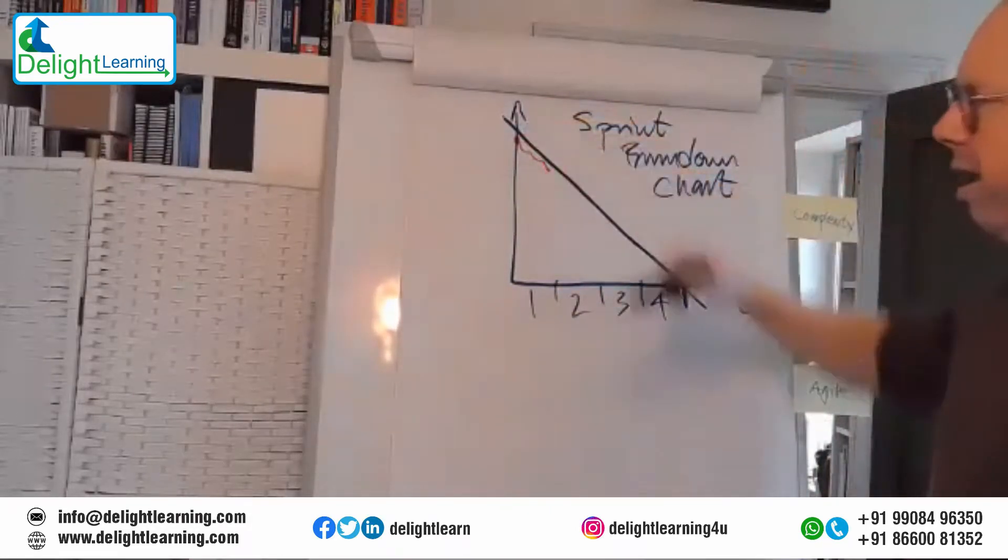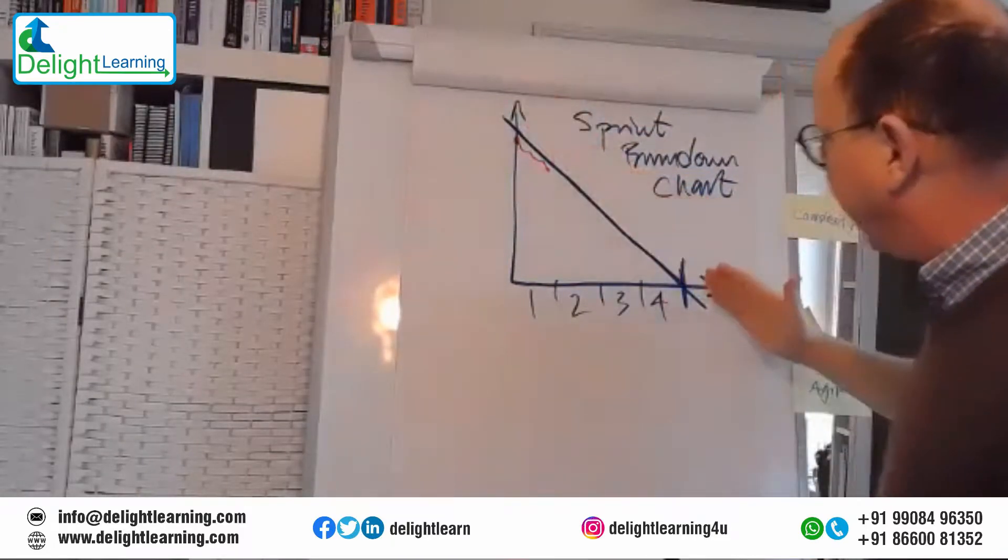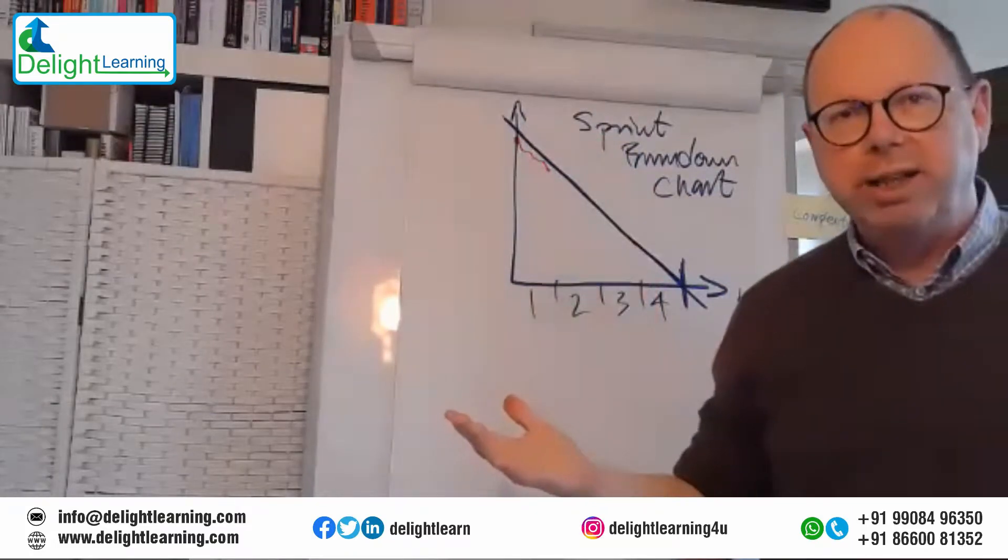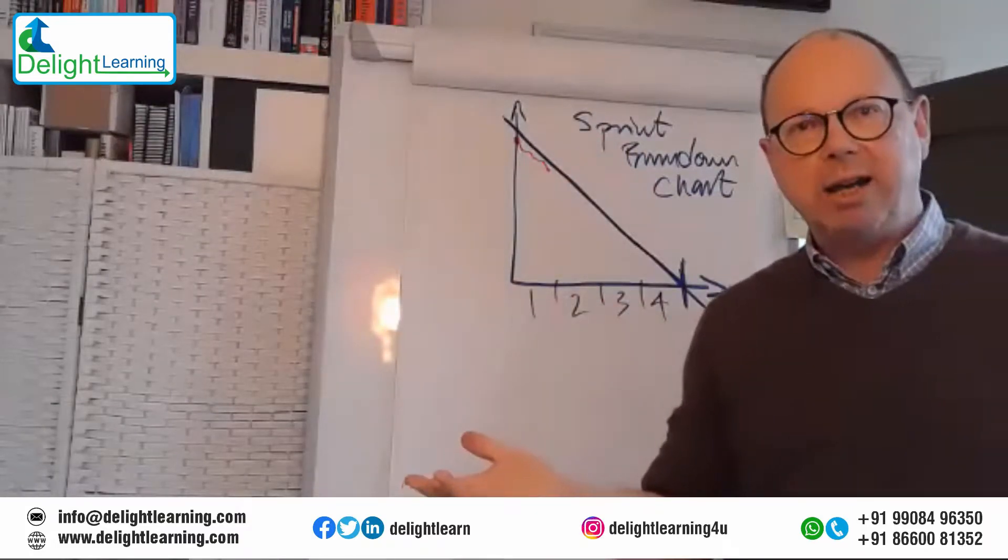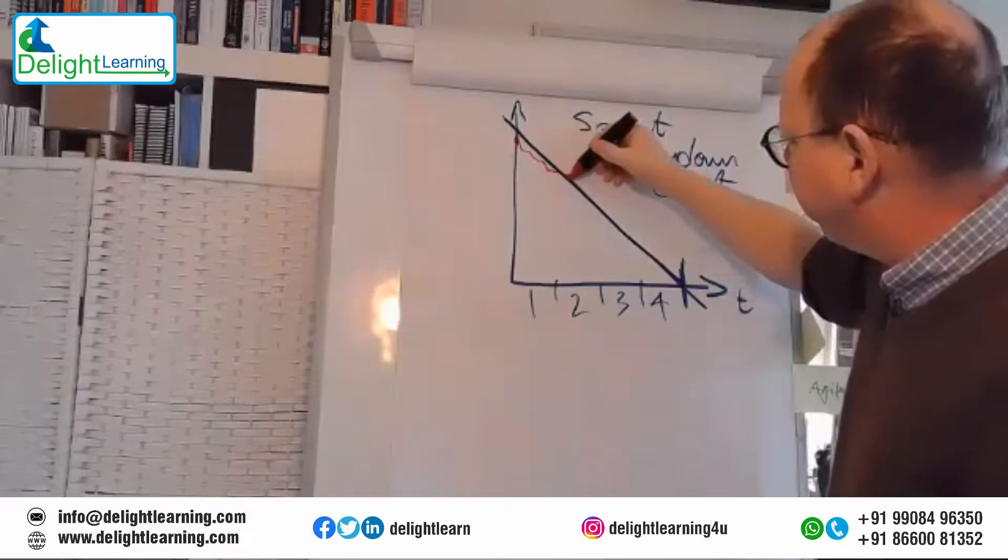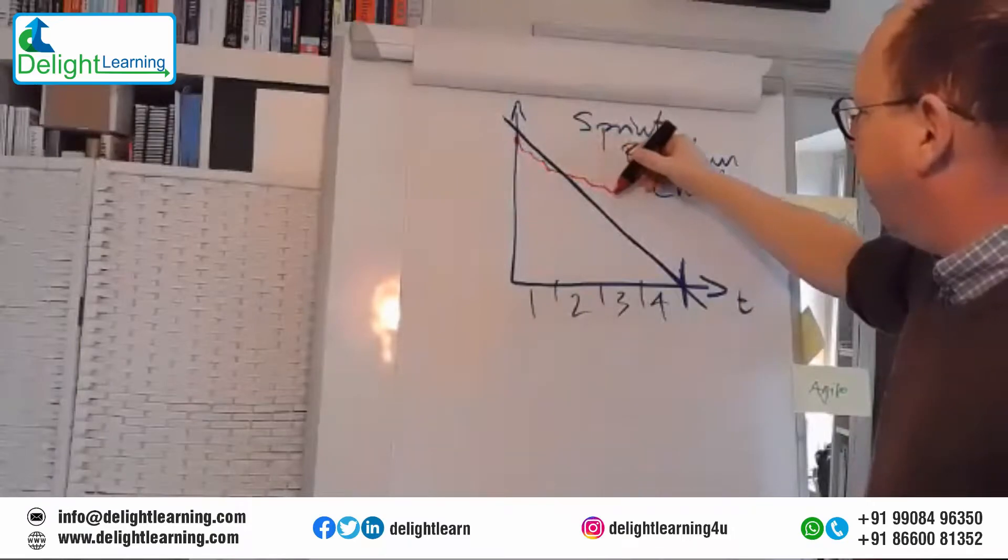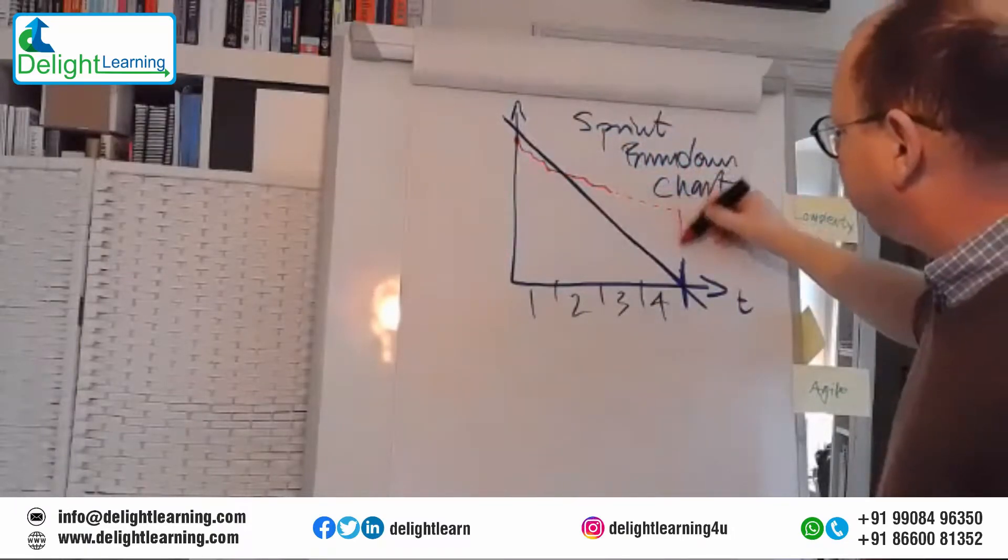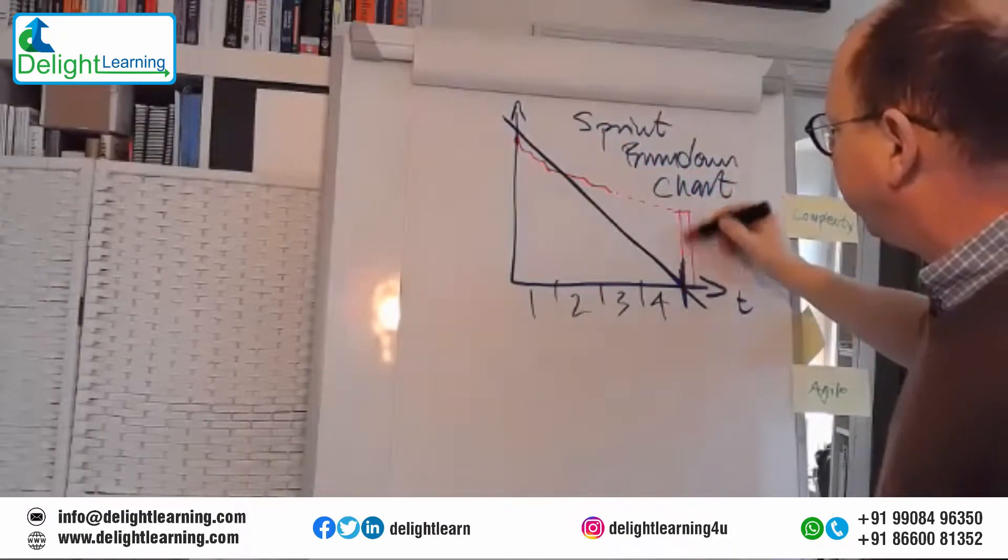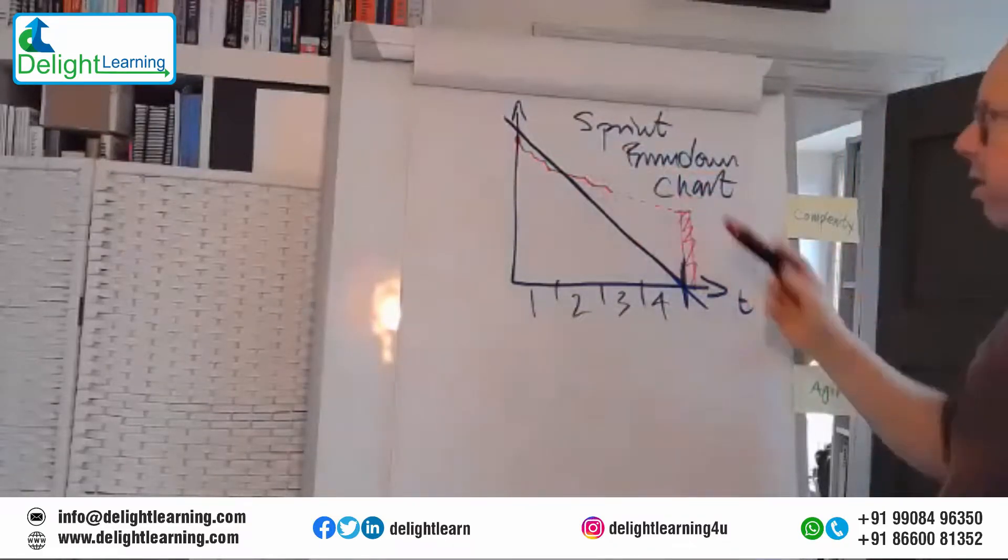If the amount of remaining work is below the blue line, then we usually say we're on track. And if not, if it starts looking like this, that may be a signal that now it doesn't look that good. It looks like we may have this much work left when the sprint has come to an end. So we are not on track.